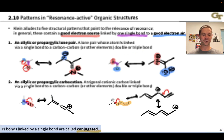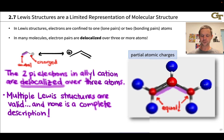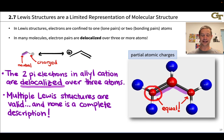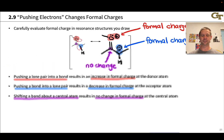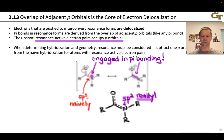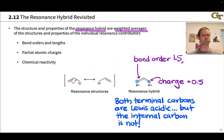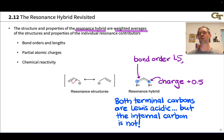Looking back at the quantum mechanical structure of allyl cation, we see that there is more positive charge at the terminal carbons and the central carbon is more negative. So the central carbon in allyl cation is not Lewis acidic. Thinking carefully about the resonance structures helps us see this easily: in no resonance structure is the central carbon of allyl cation positively charged. Both terminal carbons are Lewis acidic and electrophilic, but the internal carbon is not. Resonance structures give a lot of insight into these sites of reactivity in molecules with electron delocalization.